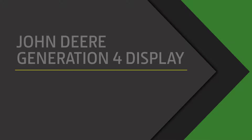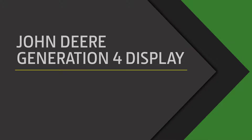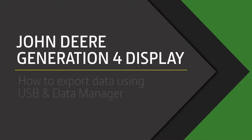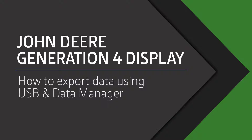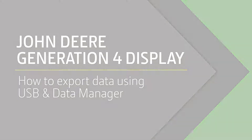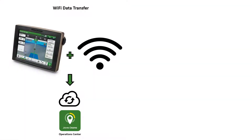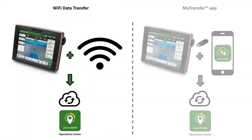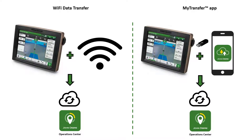In this video we're going to show you how to transfer setup and work data from your Generation 4 display to the John Deere Operations Centre using a USB and Data Manager. If you don't have a JDLink connected machine, manual USB transfer is one of the various other options for transferring your data, however it is the most intensive. Other methods including Wi-Fi transfer and the MyTransfer app are covered in separate videos.